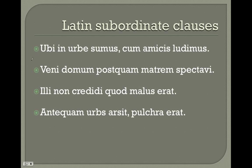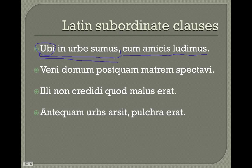Let's look at a couple of examples. In the first sentence, the editor has been nice with punctuation: 'Ubi in urbe sumus, cum amico ludimus.' Here's our subordinating conjunction 'ubi'; we keep going until we get to our verb — there's our subordinate clause. Subordinating conjunction, then verb — 'when we are in the city' is the subordinate clause, and 'we play with our friends' is the main clause.